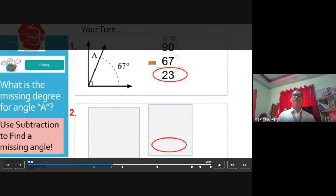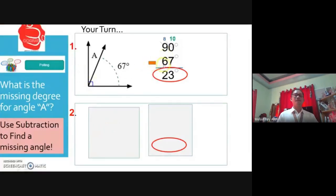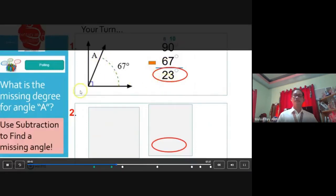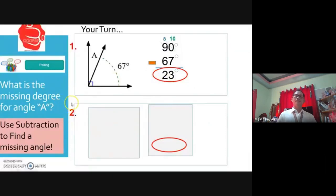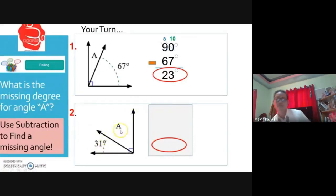All right, let's take a look. If it's a 90-degree angle, which it is, you're going to subtract 90 minus 67. The missing angle A is 23 degrees. All right, now it's your turn to try number two. You're given part of this angle as 31 degrees. What is the missing part of this angle? Letter A here. Go ahead and answer that.